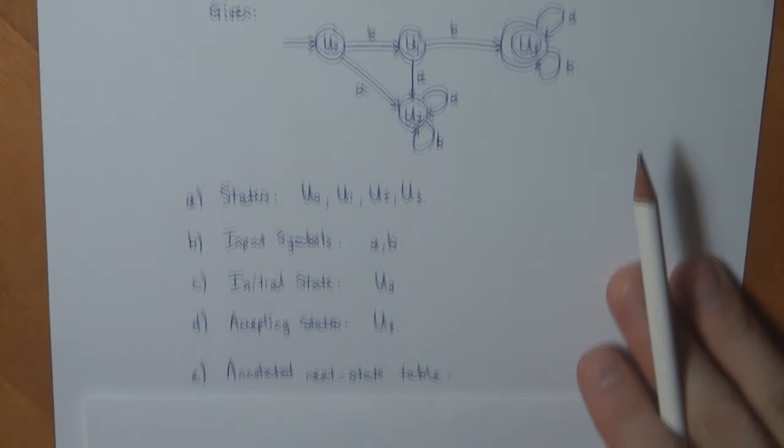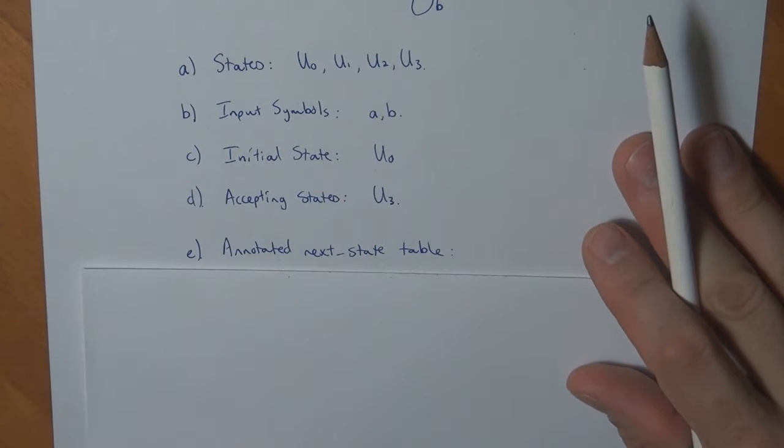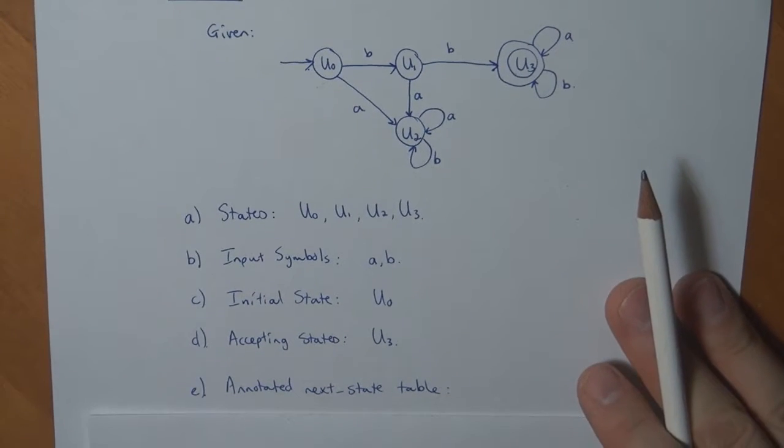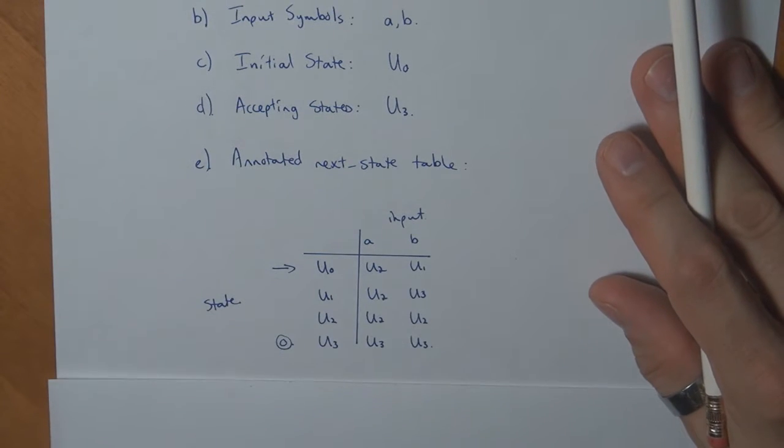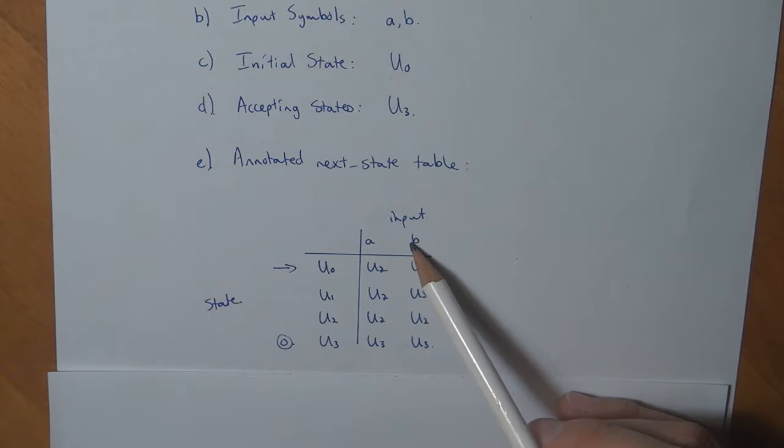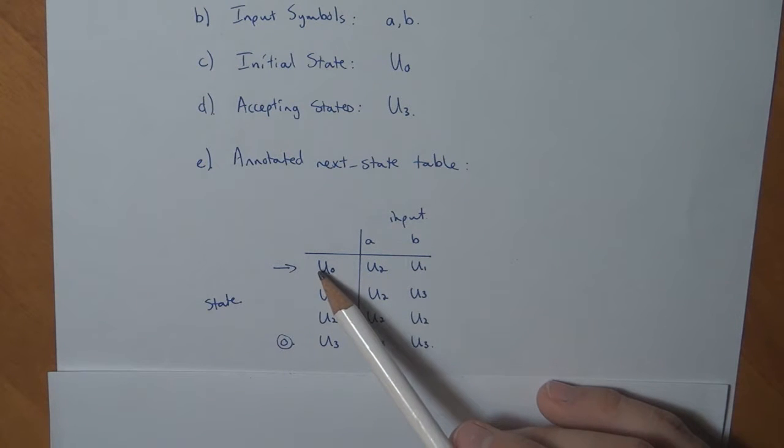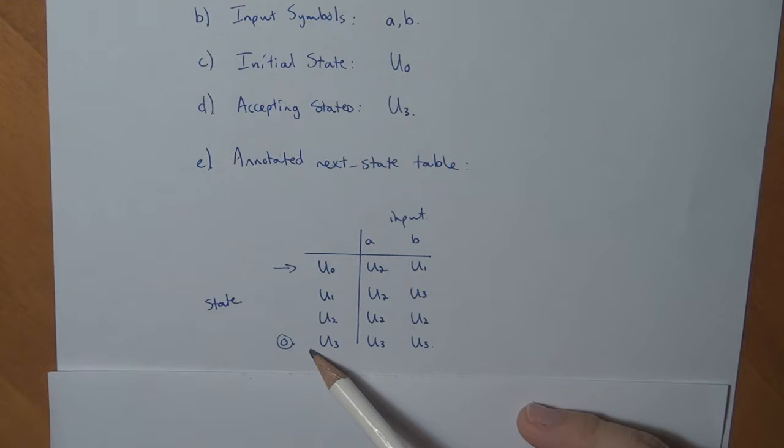So now my annotated next state table. If you look at the diagram or keep it in front of you, it looks like this, where I have my two inputs, my initial state, and my accepting state.